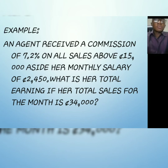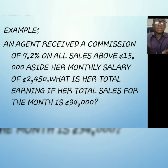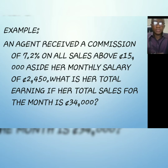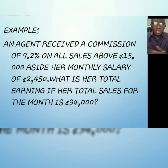Assignment: An agent receives a commission of 7.2% on all sales above 15,000, aside from her monthly salary of 2,450. What is her total earning if her total sales for the month are 34,000? Try this question on your own and WhatsApp me with your answer or discuss among your friends.